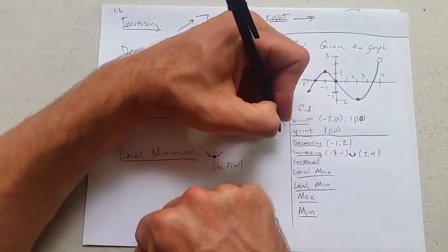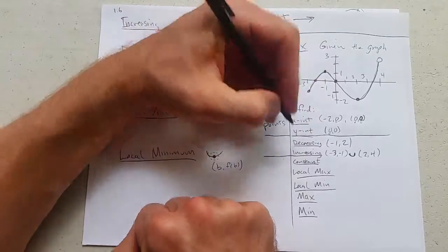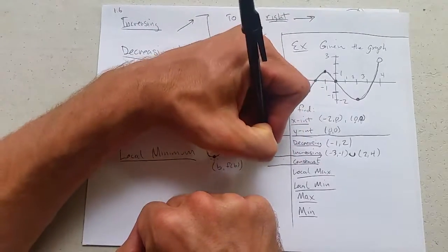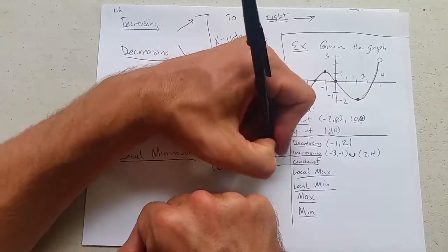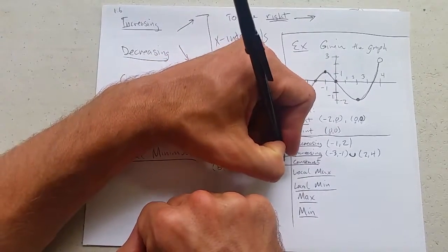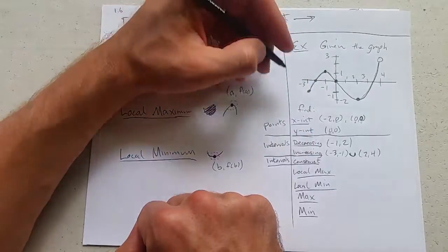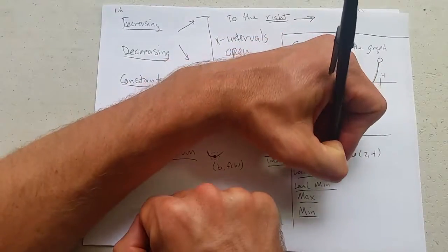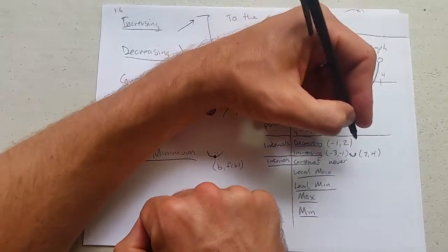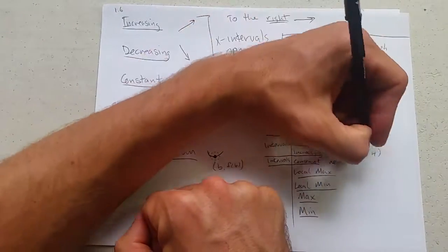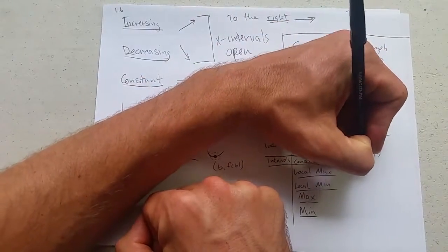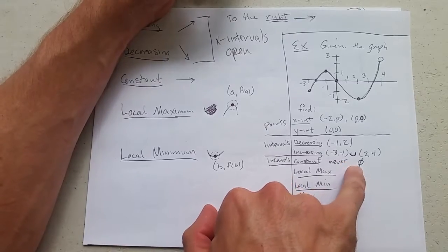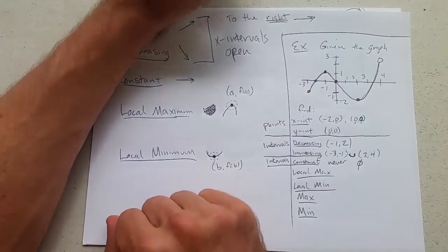Decreasing should be an interval. So these are points here. Increasing, decreasing. These are intervals. And constant. These are all intervals. Our functions won't be constant very often. Now this function is never flat. So you could write never. If you want to write mathematically in set notation, you have the empty set. Which means nothing. Doesn't mean zero. It means nothing.